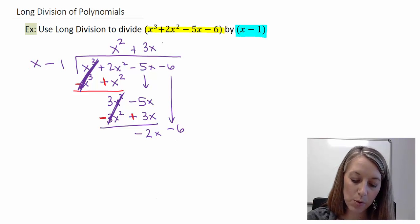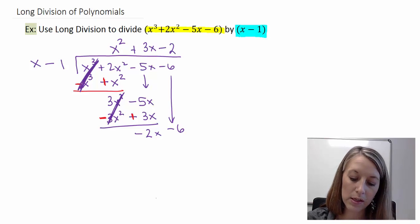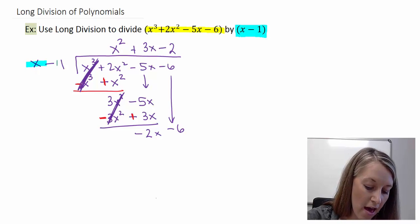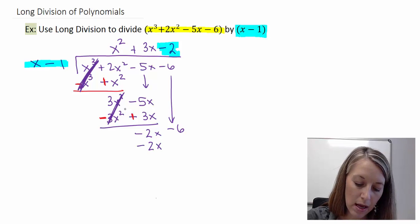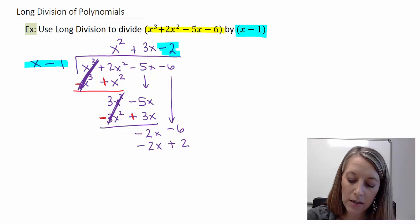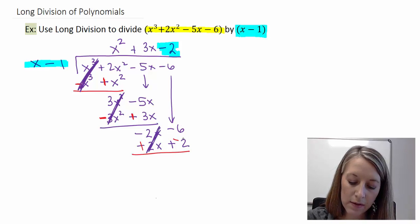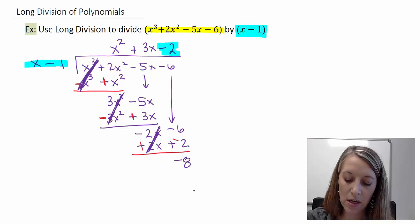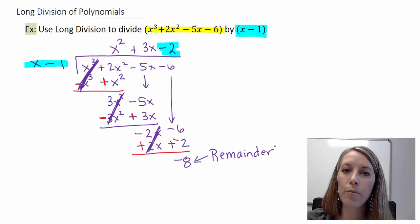X times what gives me negative 2x? X times negative 2 gives me negative 2x. So I take everything here times negative 2. X times negative 2 gives me negative 2x, and negative 1 times negative 2 gives me positive 2. I subtract — or switch my signs and add. My negative 2x's cancel out, and I'm left with negative 6 minus 2, which gives me negative 8. So this problem has a remainder.